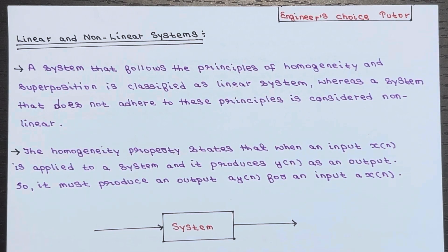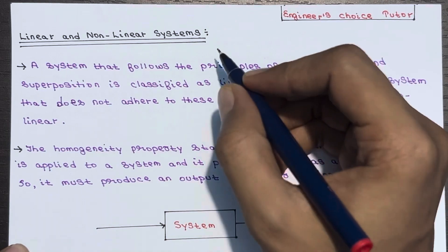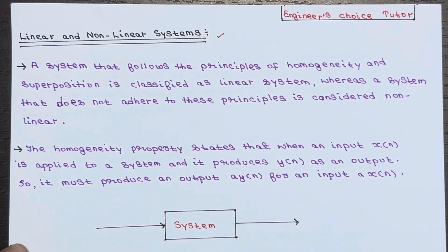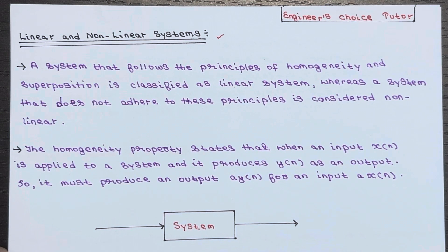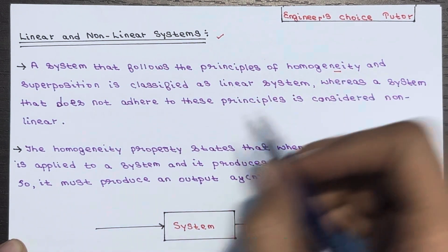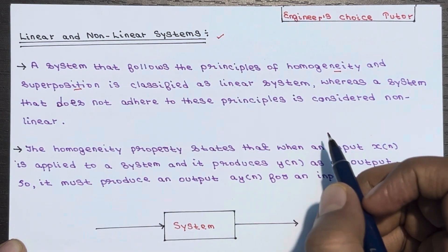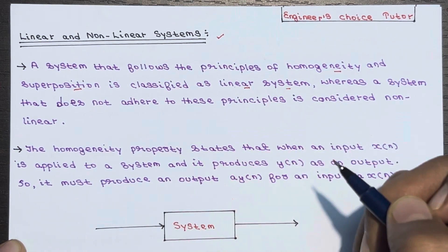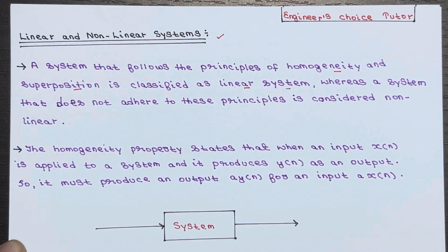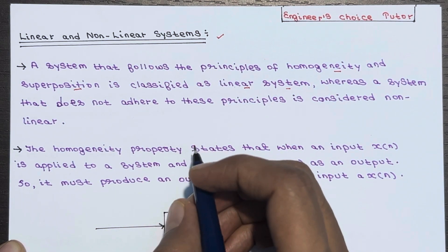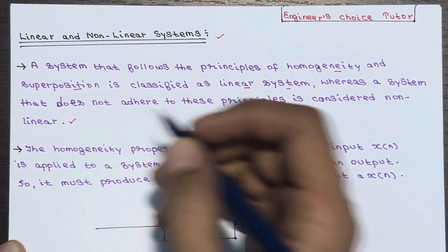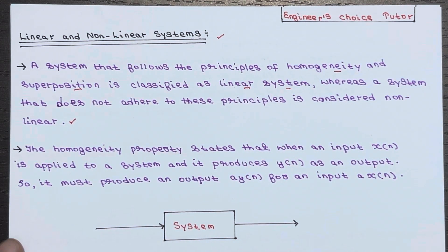In this lecture we will talk about linear and nonlinear systems. A system that follows the principle of homogeneity and superposition is classified as a linear system, whereas a system that does not adhere to these principles is considered a nonlinear system.